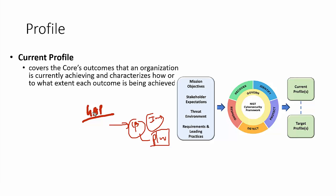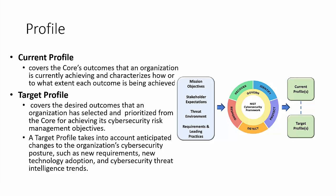The current profile is basically the list of current activities in the company and the extent to which each outcome has been achieved. The target profile covers the desired outcomes that the organization has selected and prioritized for achieving cybersecurity goals. The target profile accounts for anticipated changes to the organization's cybersecurity posture, new requirements, and new technologies — for example, moving to cloud with appropriate security.